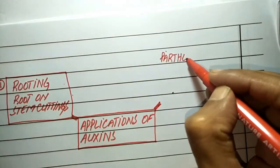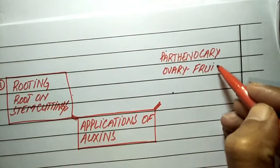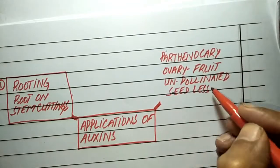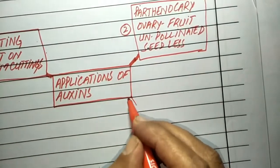They are also responsible for parthenocarpy. Application of auxins such as indoleacetic acid and indolebutyric acid to unpollinated pistils makes them develop into seedless fruits or parthenocarps, which carry a better market price.